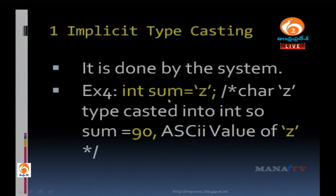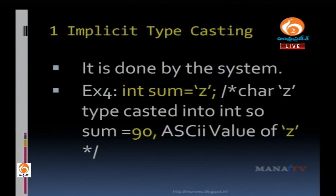Next example: int sum equals 'Z'. Here Z is type casted into its corresponding ASCII value, which is 90. So 90 is stored into the integer variable sum.